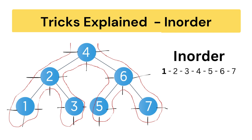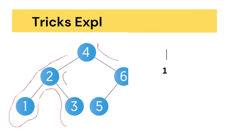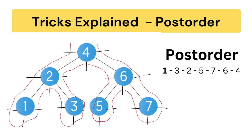For post-order traversal, you can easily guess — we follow where the right line strikes. The right line strikes at 1 first, then 3, then 2, then 5, then 7, then 6, and finally it goes to the root element. In post-order, the root always comes last. So the post-order traversal order is 1, 3, 2, 5, 7, 6, 4.